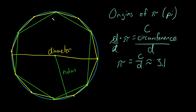He found the value of the 96-gon using geometry, and since the inscribed polygon is always a little under the actual circumference, he found that the ratio of the perimeter of the 96-gon to the diameter was 3 and 1/7. So pi is a smidgen greater than 3 and 1/7.